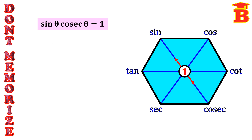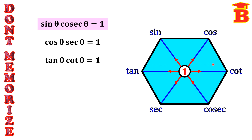Similarly, taking the next diagonal — cos and secant — the product of these two also equals 1, giving cos θ × sec θ = 1. Taking the next diagonal — tan and cot — their product also equals 1, giving tan θ × cot θ = 1. So taking the diagonal lines, we see that each product equals 1.